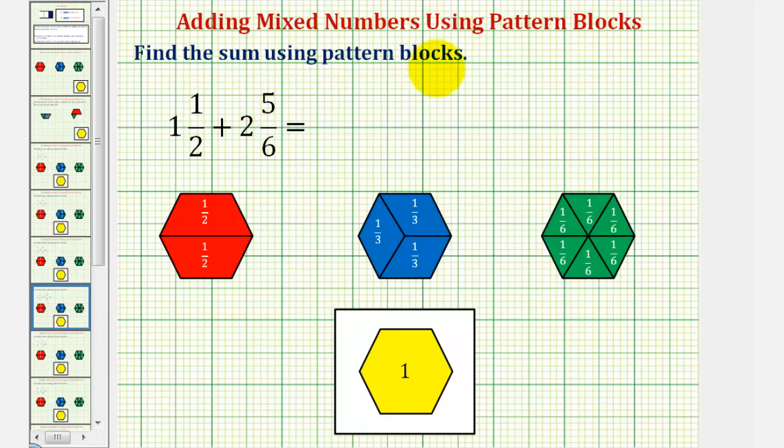We want to find the sum of the mixed numbers using pattern blocks. We have one and one-half plus two and five-sixths.